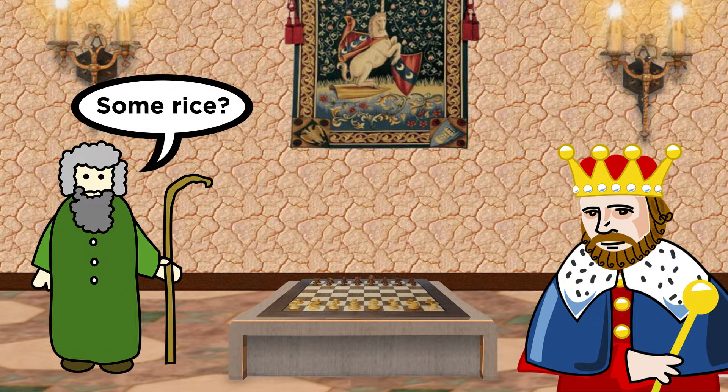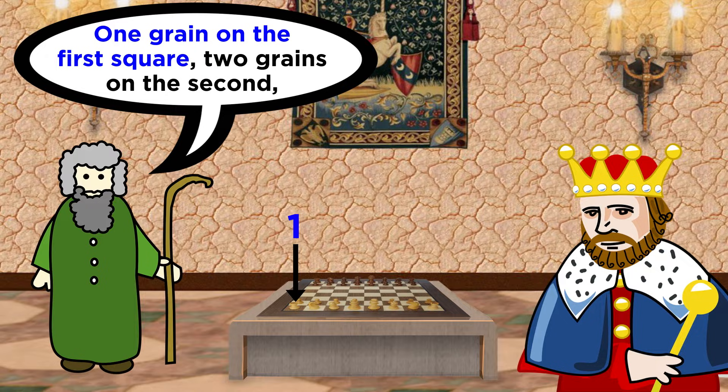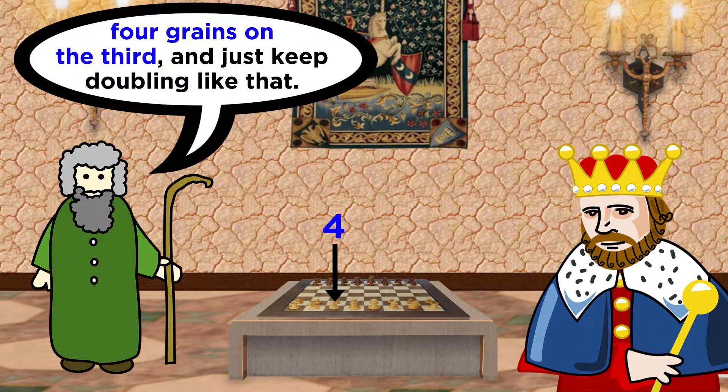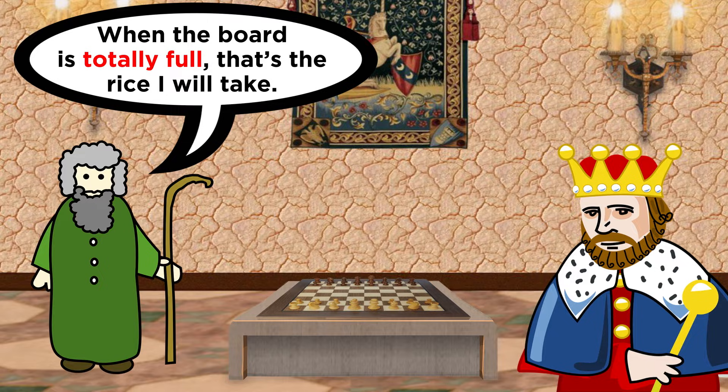He said, I am a modest man, I desire but a few grains of rice. Take this chessboard and place one grain of rice on the first square, then two grains on the second, and then four grains on the third. Continue in this manner, always doubling the previous number until all the squares are full.